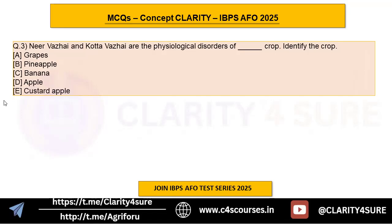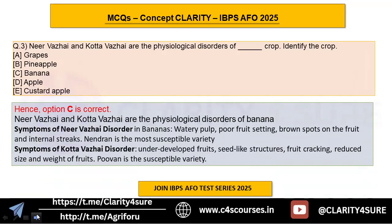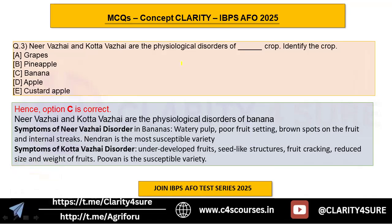The answer is option C, banana. Near vizai — where 'near' relates to water — has symptoms of watery pulp and poor fruit setting. Kota vizai involves underdeveloped fruits with seed-like structures, as 'kota' relates to seed. Nendran is the most susceptible variety for near vizai, and Poovan is the susceptible variety for kota vizai.